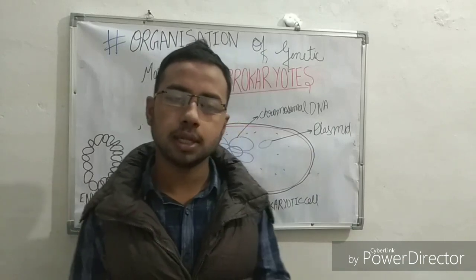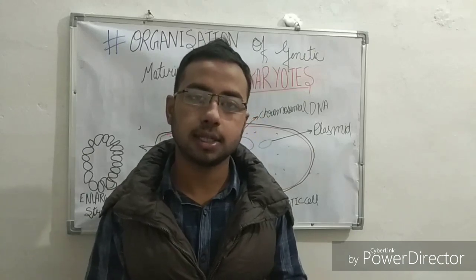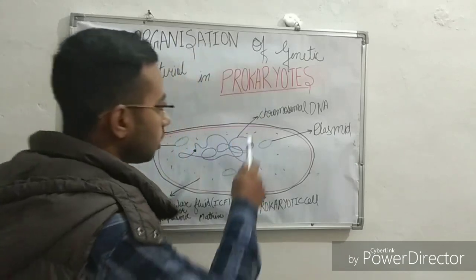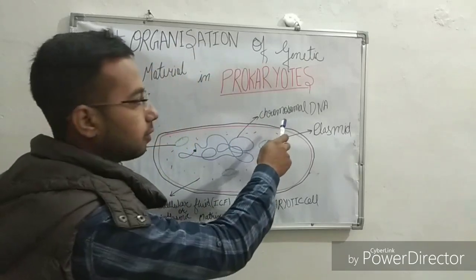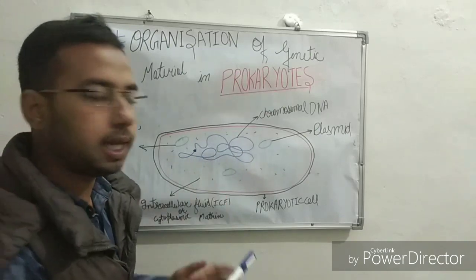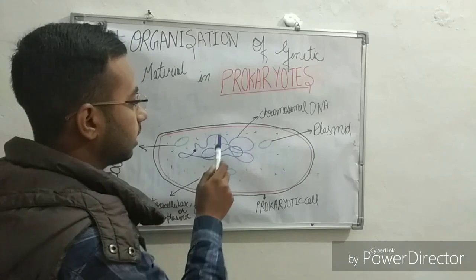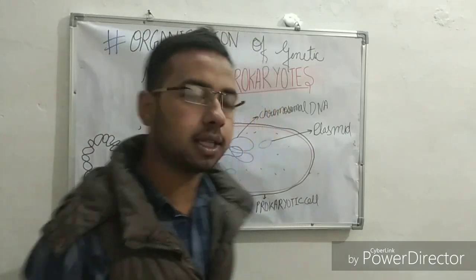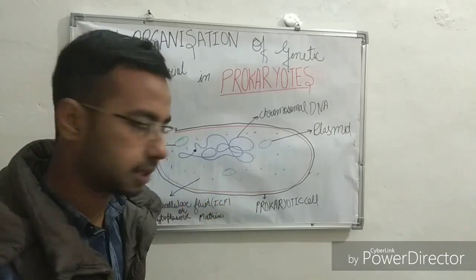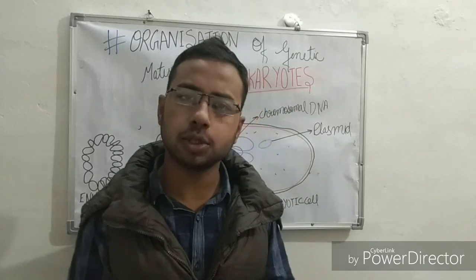The genetic material in prokaryotic organisms is a single, cyclic, double-stranded chromosomal DNA. It is unique — that is, single — in a particular cell, and this cyclic double-stranded chromosomal DNA is present in the cytoplasmic fluid or intracellular matrix.